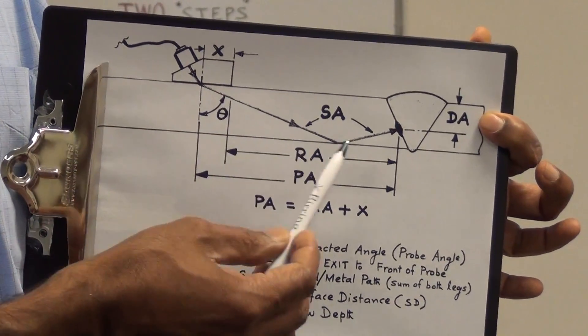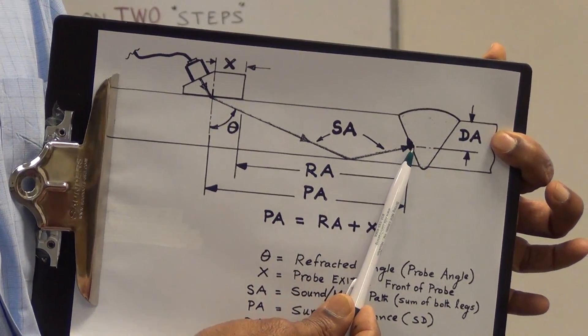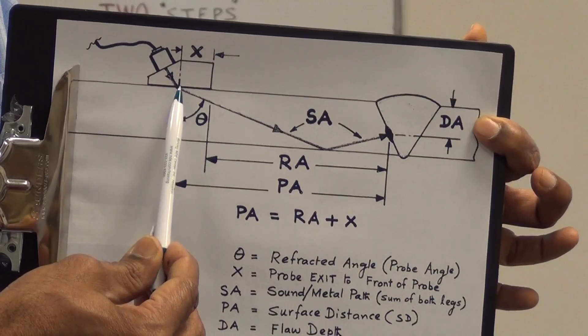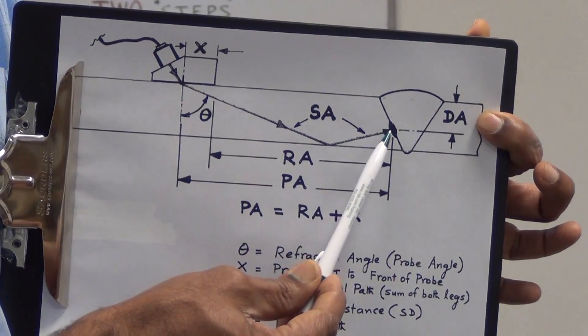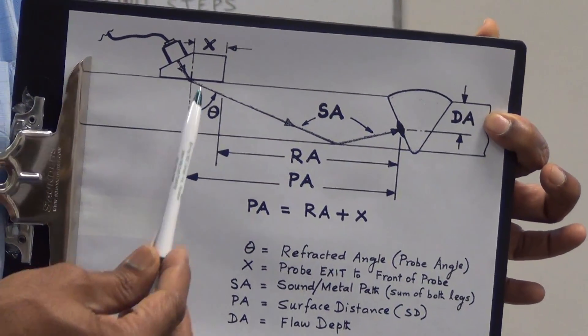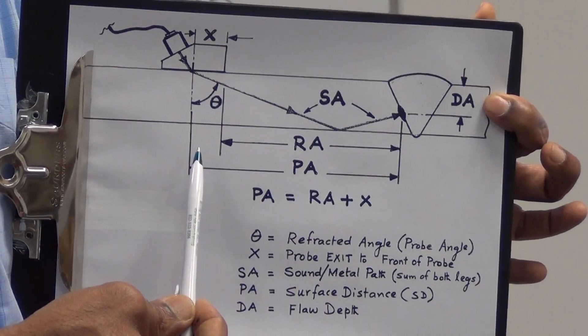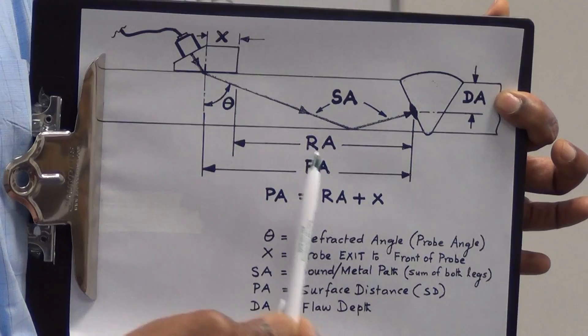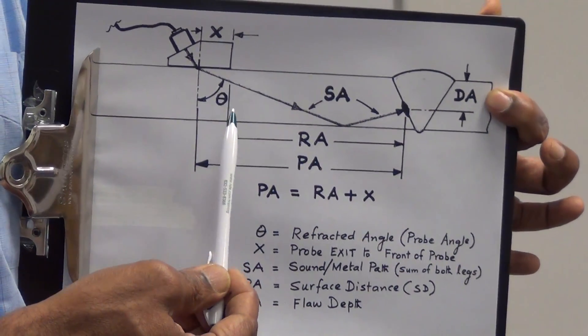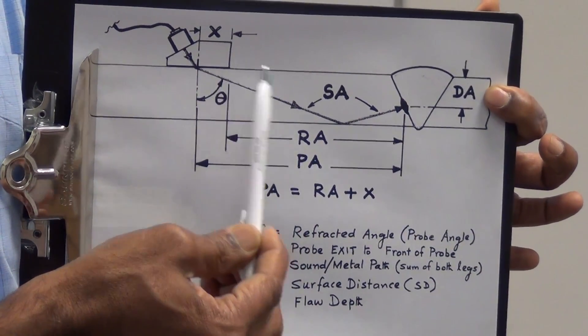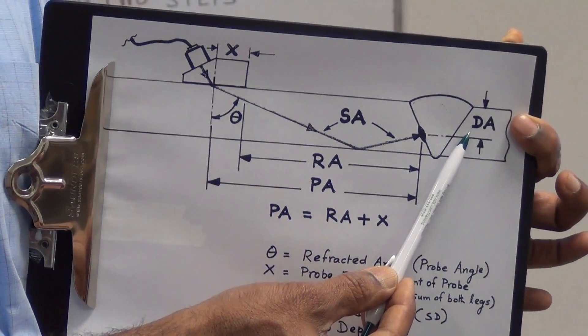And then we actually illuminate the weld. Let's say there is a defect here which could be lack of fusion. In that case we will see that defect in the second leg. A leg is from here to there is the first leg, this is the second leg. Now knowing the value of this refracted angle, the machine will actually calculate PA which is the distance from the exit point to the defect. And knowing the refracted angle and the thickness of the plate, the machine will also calculate DA which is the depth of the flaw.